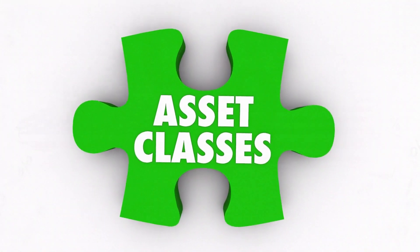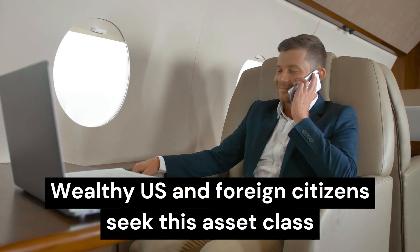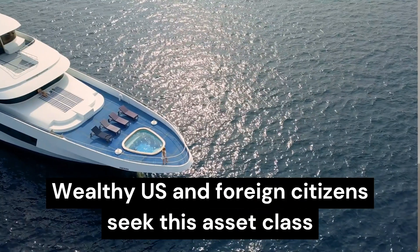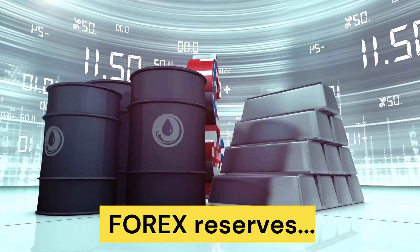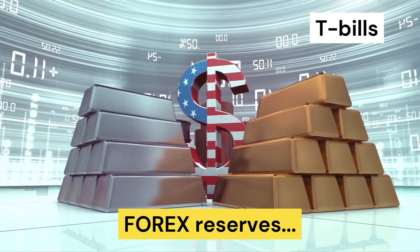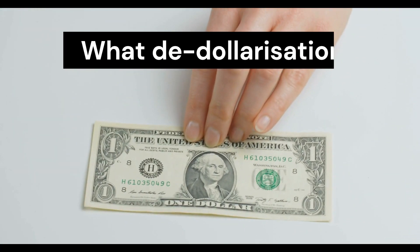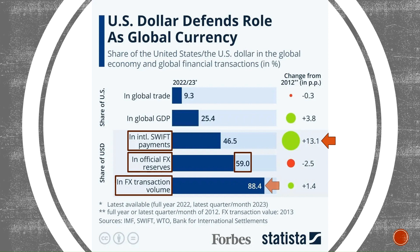You lend money to the US government when you buy their government bonds or US Treasury bills, known as T-bills. US T-bills are considered one of the safest asset classes globally. Wealthy US citizens have significant exposure to T-bills. Even wealthy non-US citizens — rich Russians, Chinese, Indians, etc. — prefer to keep some of their wealth in T-bills. Not only that, foreign governments, as they build and maintain their foreign exchange reserves, keep a large chunk in the form of US dollar-denominated assets and specifically T-bills. Despite the recent talk of de-dollarization, the US dollar remains dominant. In fact, since 2012, the dollar has only gained in importance. The dollar is up 13% in international SWIFT payments. The dollar still makes up 59% of the forex reserves of other nations, despite dropping only marginally. And in forex transaction volume, there is no competition — the dollar completely dominates with almost a 90% share.